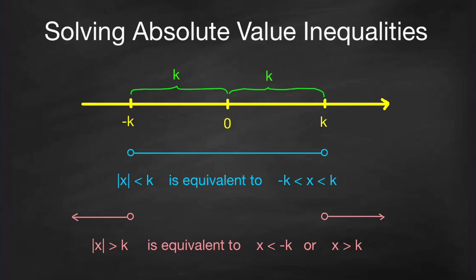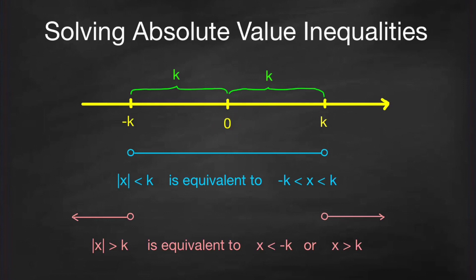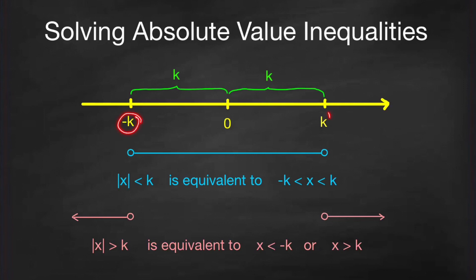With this geometric interpretation, if you're solving absolute value of x less than k, and k is a positive number, it means the distance of x from 0 is less than k. So your points lie on the line segment excluding the endpoints k and negative k. Therefore, this inequality with absolute value is equivalent to the compound inequality: x must be between negative k and positive k, excluding the endpoints.